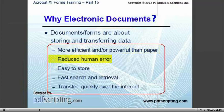The same tools are also capable of massively reducing human error. Just think about how spell checkers have changed how we write. And of course, the electronic documents themselves are much easier to store, they're much easier to search, and they're much easier and cheaper to transfer than paper documents.